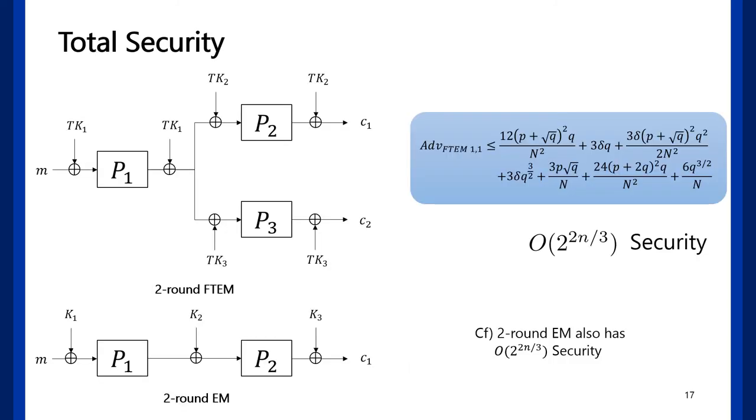The total security is like this. It seems somewhat complicated, but the point is, it has two-thirds of n-bit security, same with two-round even-Mansour. The TEM paper showed tweaking does not degrade the security of two-round even-Mansour, and we showed forking also does not degrade its security.